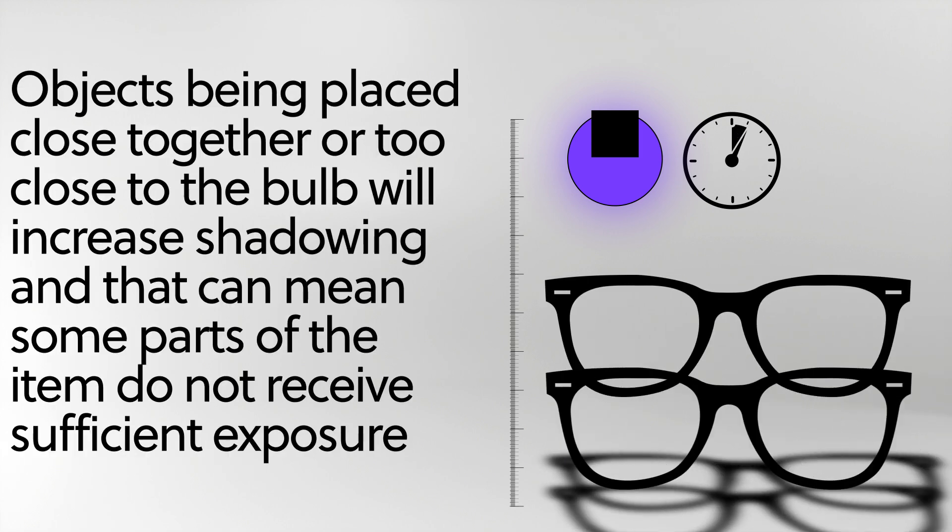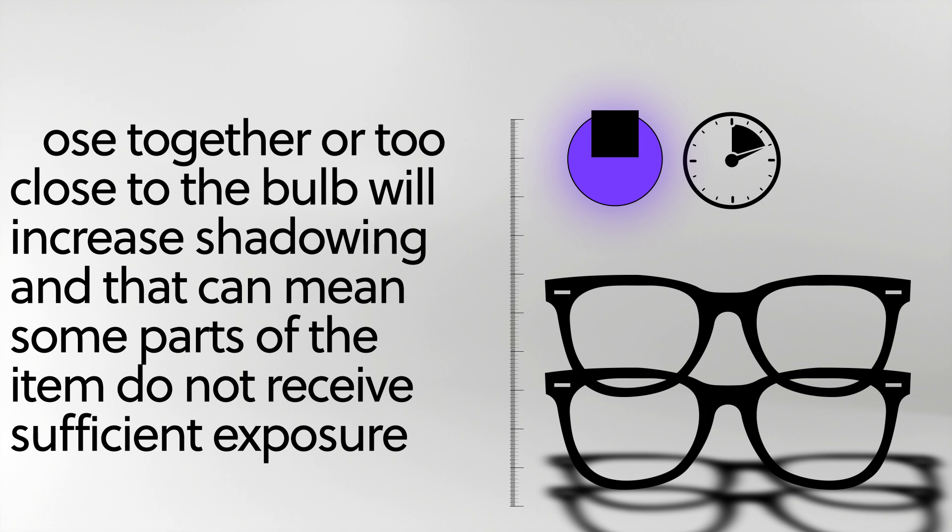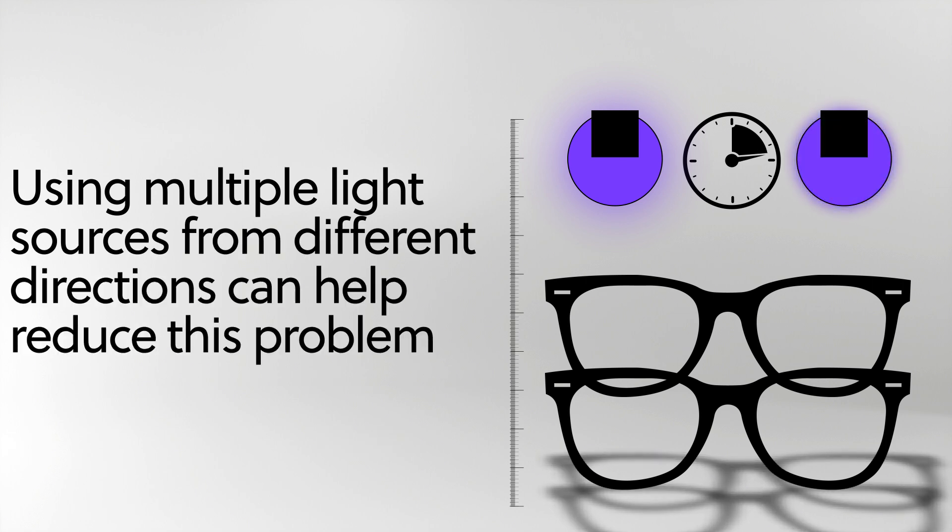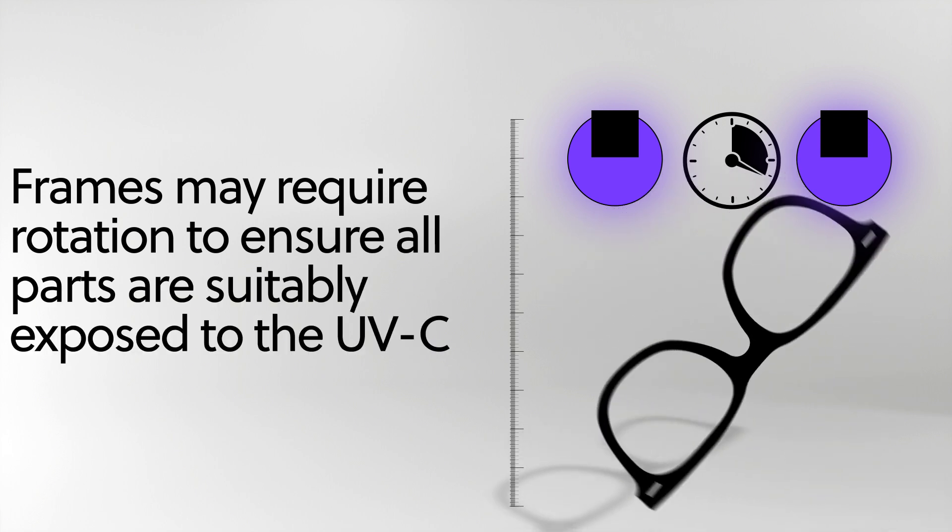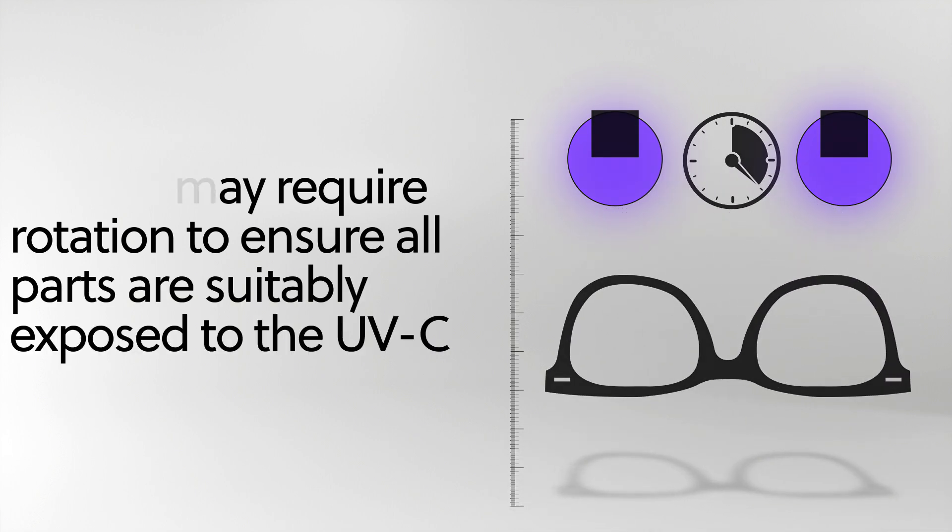Objects being placed close together or too close to the bulb will increase shadowing, and that can mean that some parts of the item do not receive sufficient exposure. Using multiple light sources from different directions can help reduce this problem. Frames may require rotation to ensure that all parts are suitably exposed to the UV-C.